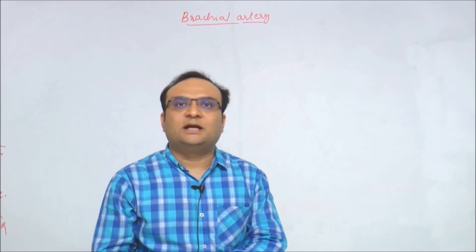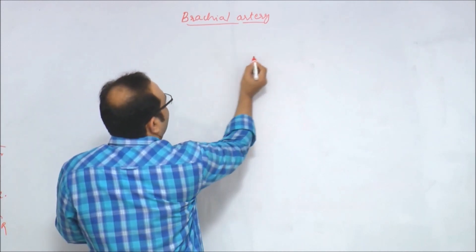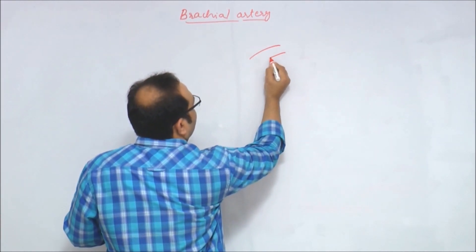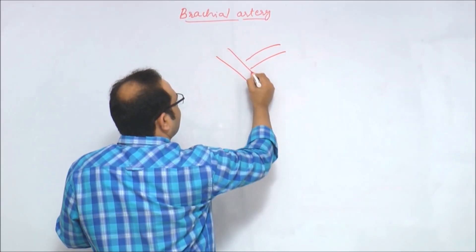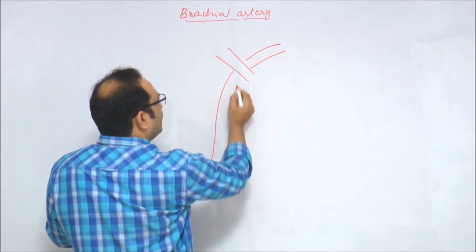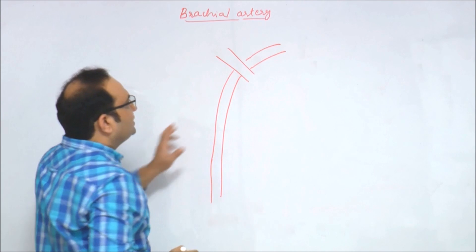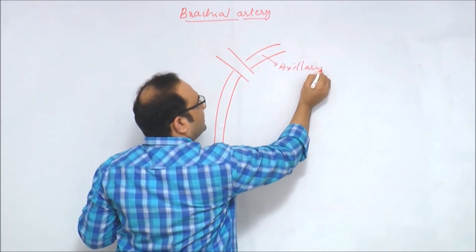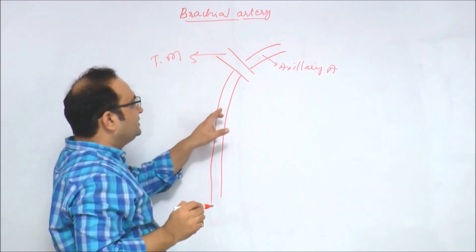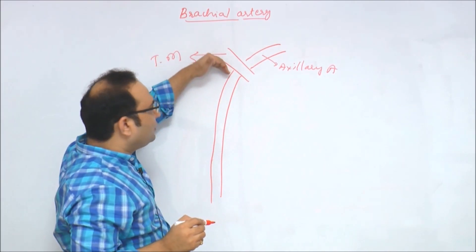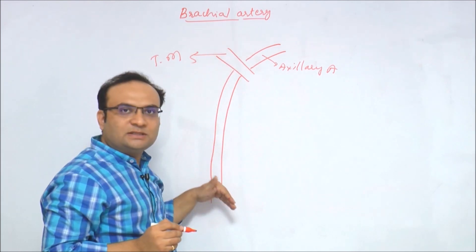The brachial artery is the continuation of the axillary artery. At the lower border of the teres major muscle, the axillary artery continues downwards as the brachial artery. This is the third part of the axillary artery transitioning into the brachial artery from the lower border of the teres major onwards.